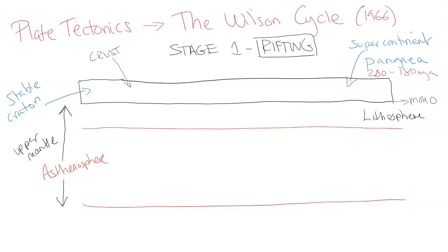And the Wilson Cycle describes how that huge supercontinent would break up, like what would cause it to break up and what would happen as it's breaking up.